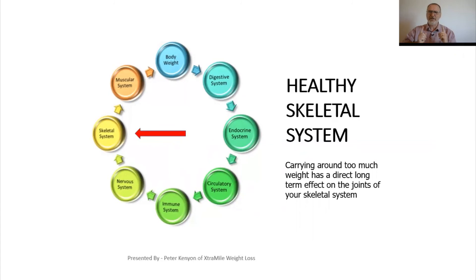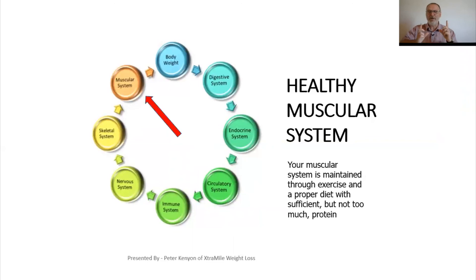To develop a healthy skeletal system, you've got to be aware that carrying around too much weight has a direct long-term effect on the joints of the skeletal system. You know, a lot of joint problems that we have as we get older come back to carrying around too much weight. That means we have to lose weight. We do that with exercise.